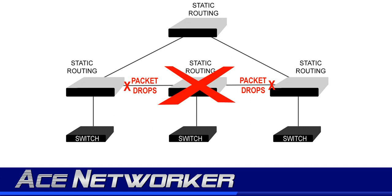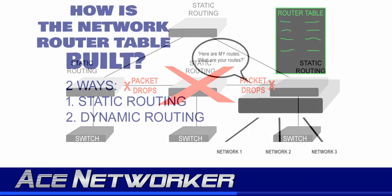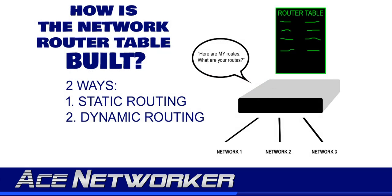This can be bad as an entire network can actually go down because of this. This leads us to the second method — the second type of route table entry used on computer network routers to build routing tables — and that is known as dynamic routing.